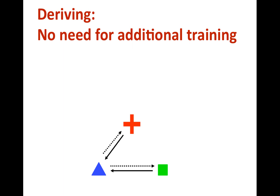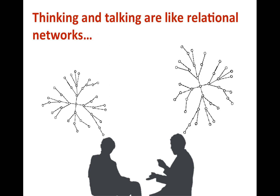This might seem obvious, but it is quite extraordinary to know something we have never been taught before. And it gets even more remarkable: you can derive that the red cross and the green square are similar, even though they have never been presented together. This is what we call combinatorial entailment. So what we learned so far is how language can be approached through what we call in RFT the arbitrarily applicable derived relational responding. Derived relational responding means the behavior of building relations, including deriving relations that have not been taught before. And arbitrarily applicable means that it can be symbolic — it doesn't depend on intrinsic characteristics of the things being related.